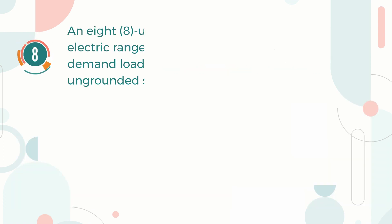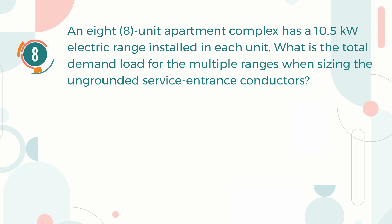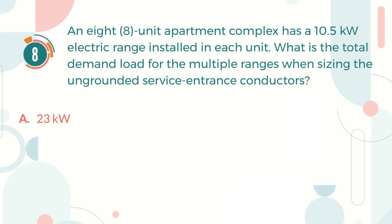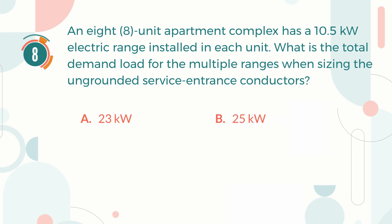Number 8. An eight-unit apartment complex has a 10.5 kW electric range installed in each unit. What is the total demand load for the multiple ranges when sizing the ungrounded service entrance conductors? A. 23 kW. B. 25 kW. C. 56.5 kW. D. 84 kW.